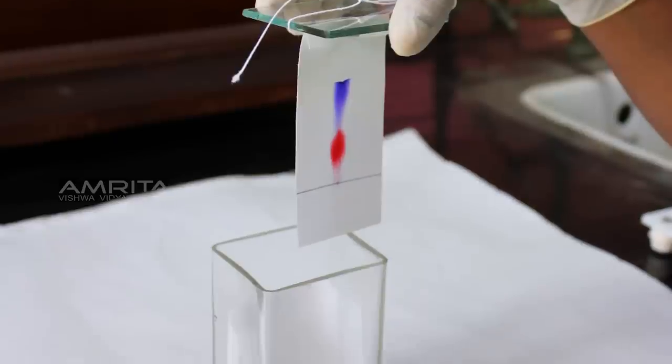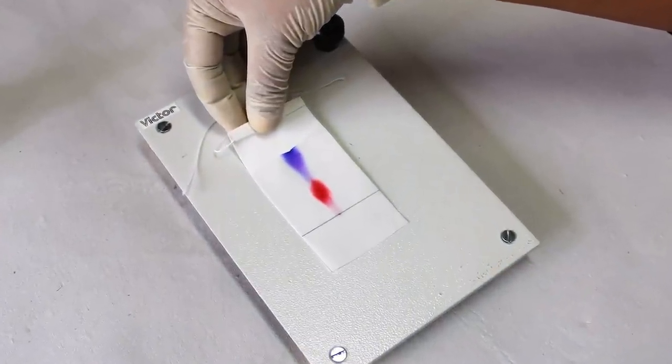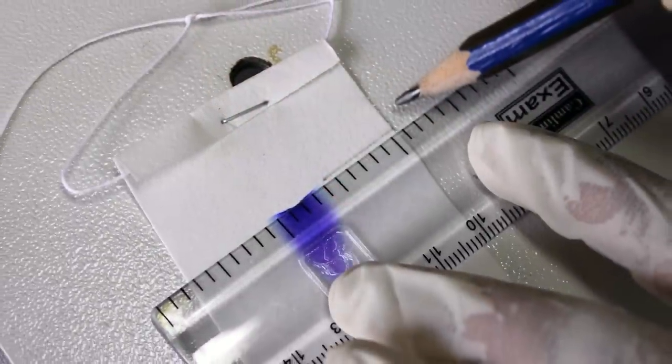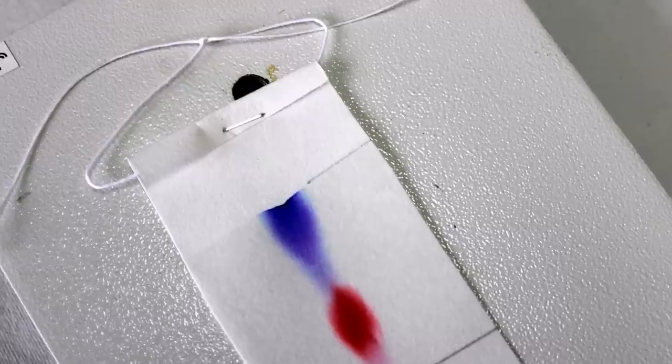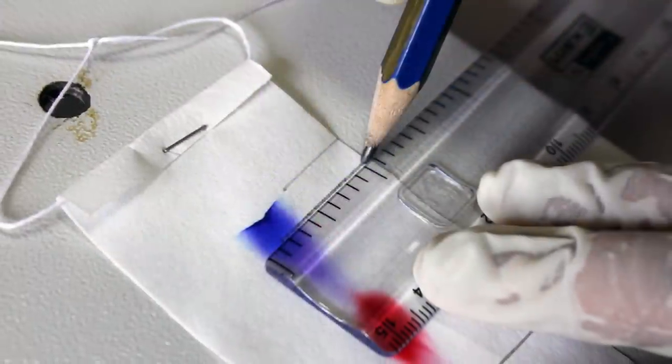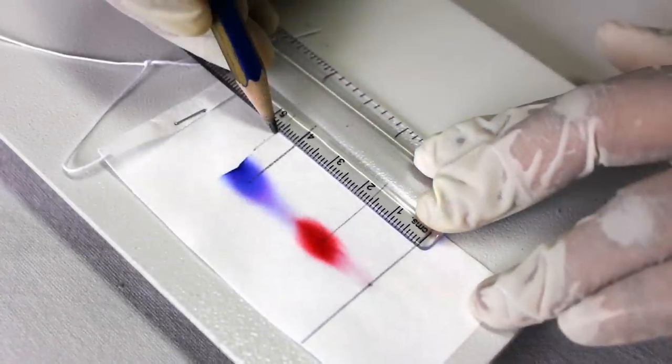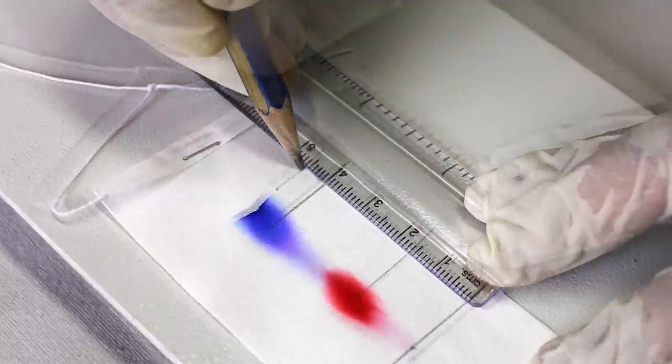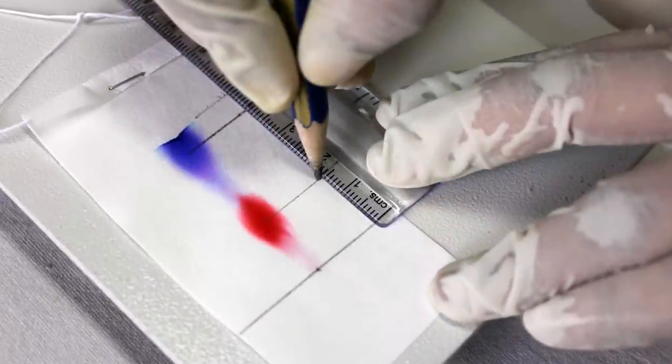Take the filter paper out of the chamber and mark the distance that the solvent has risen on the paper with a pencil. This is called the solvent front. Dry the paper and put pencil marks in the center of the blue and red spots. Measure the distance of the solvent front from the original line and the distance of the two spots from the original line.